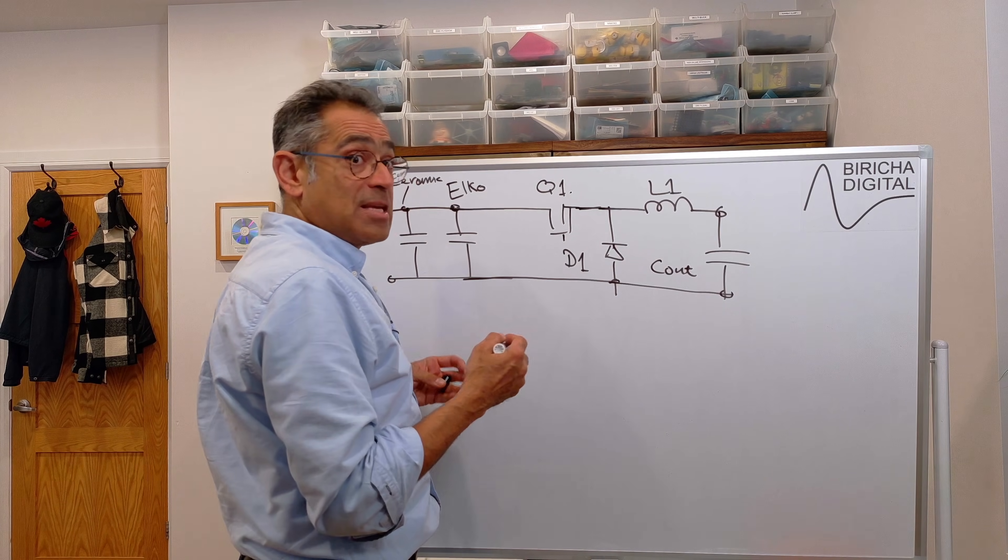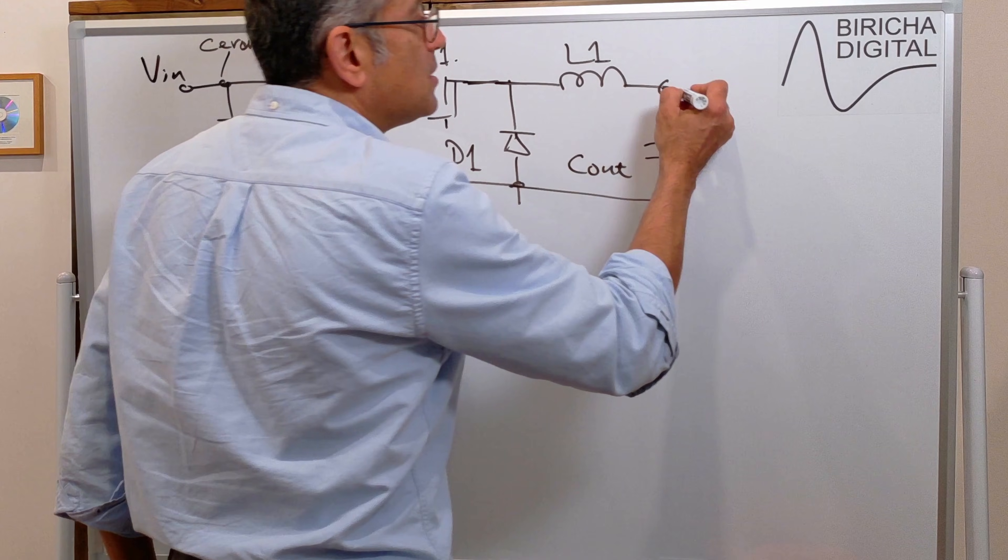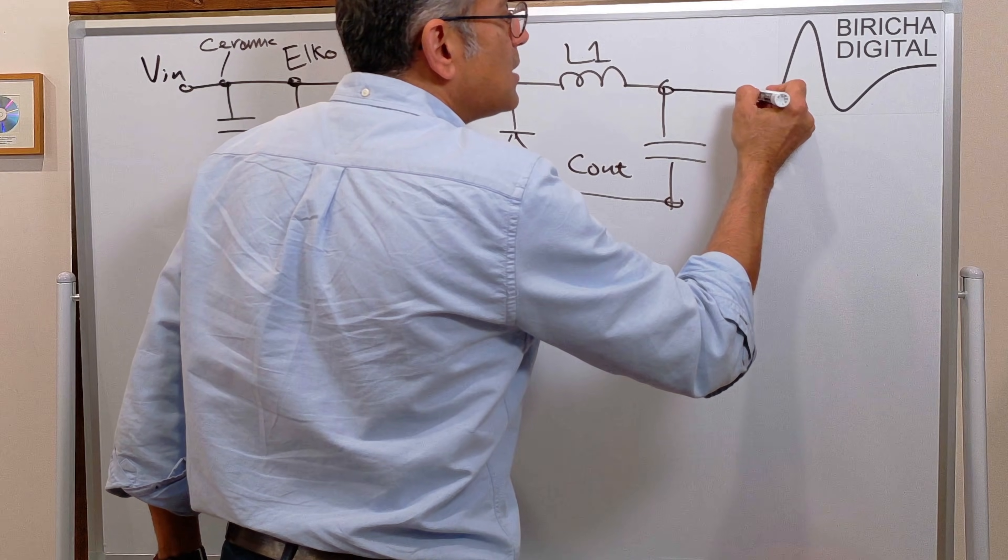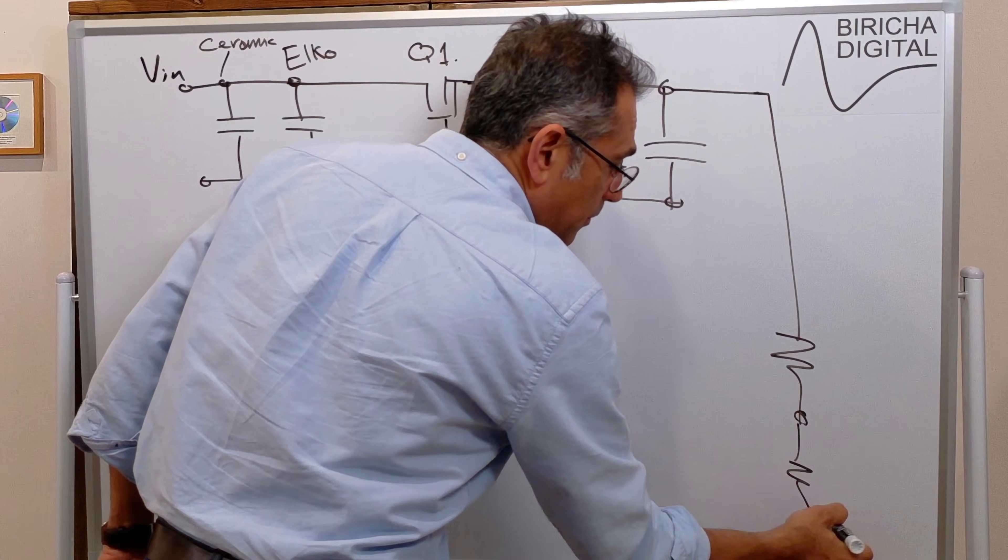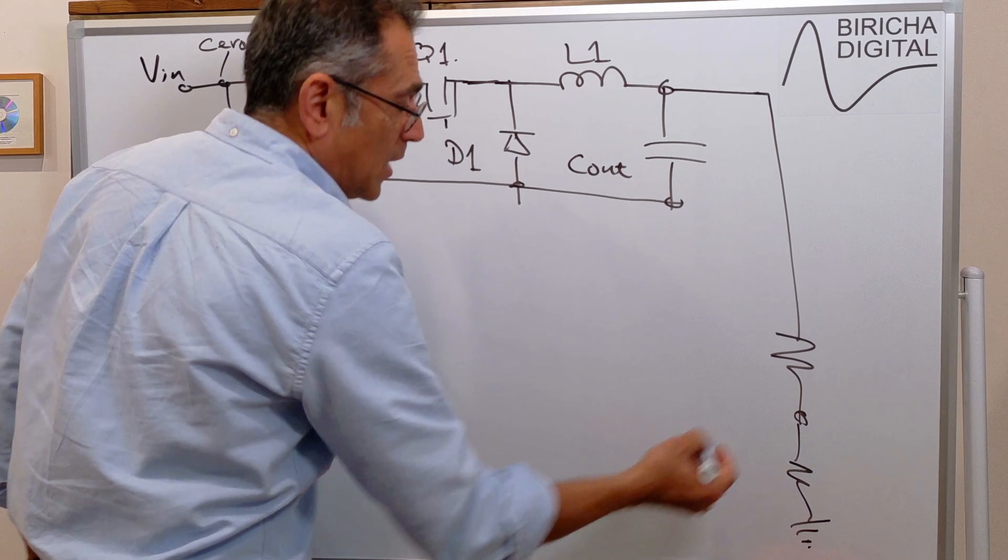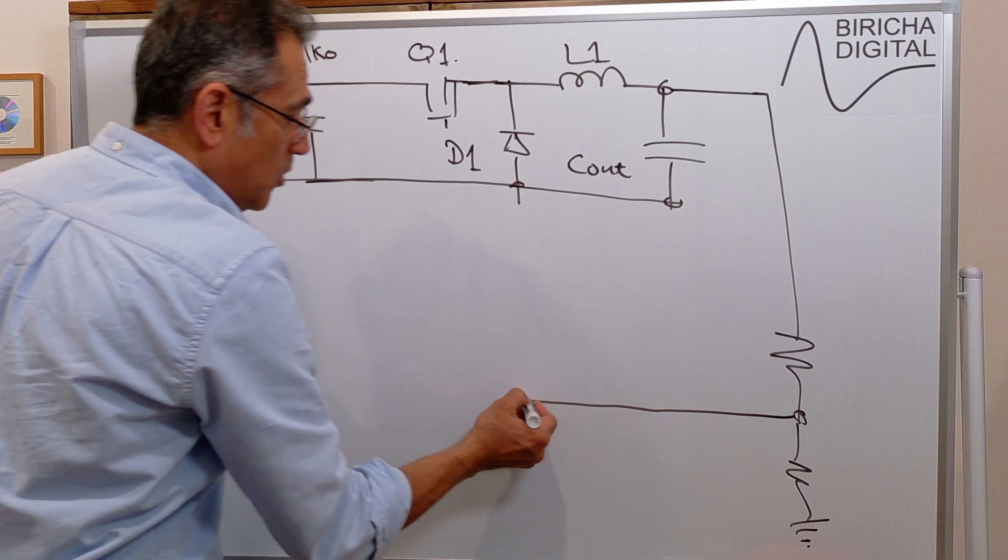And then we need to talk about the compensator. So we will learn how to design our compensator. That typically involves a potential divider. And that goes into our PWMIC.